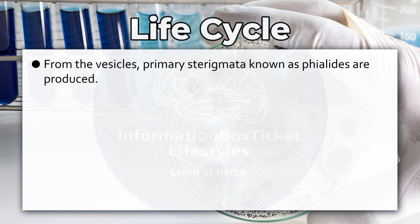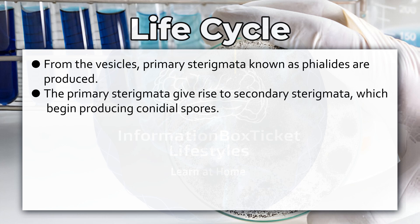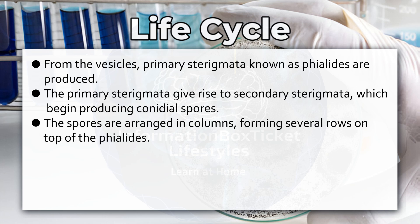From the vesicles, primary sterigmata known as phialides are produced. The primary sterigmata give rise to secondary sterigmata, which begin producing conidial spores. The spores are arranged in columns, forming several rows on top of the phialides.